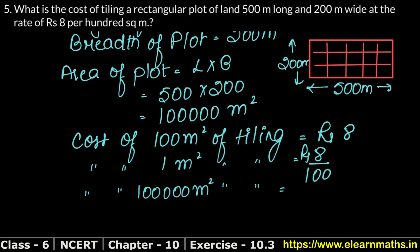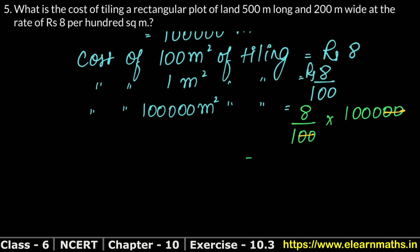The cost of tiling 1,00,000 square meters is Rs. 8 upon 100, multiplied by 1,00,000. Canceling the zeros — two zeros from two zeros — the answer is Rs. 8,000.